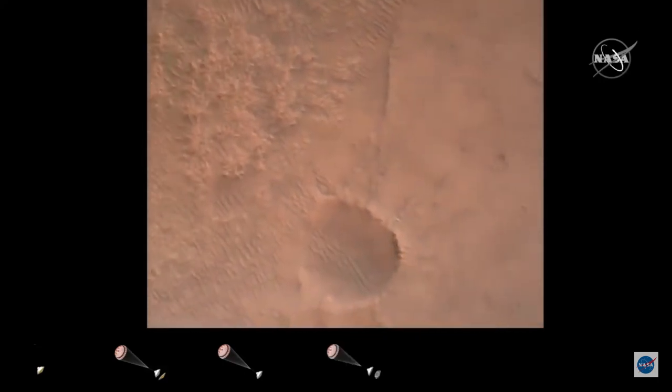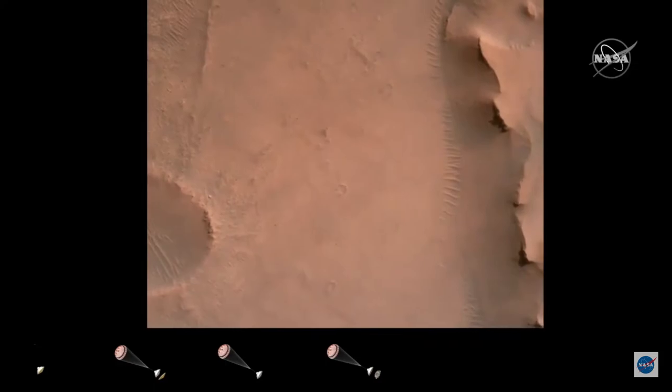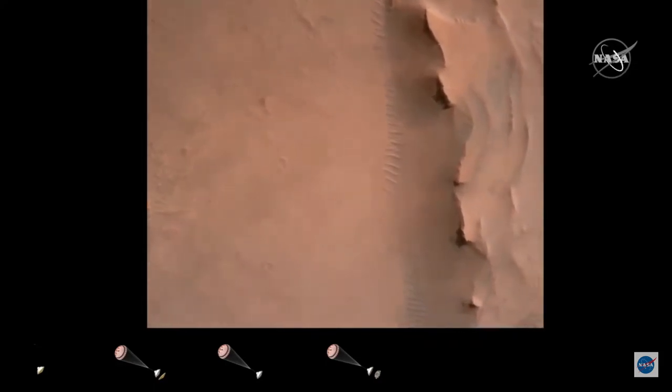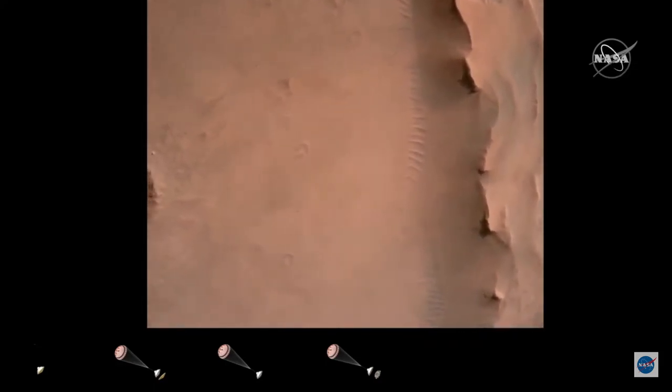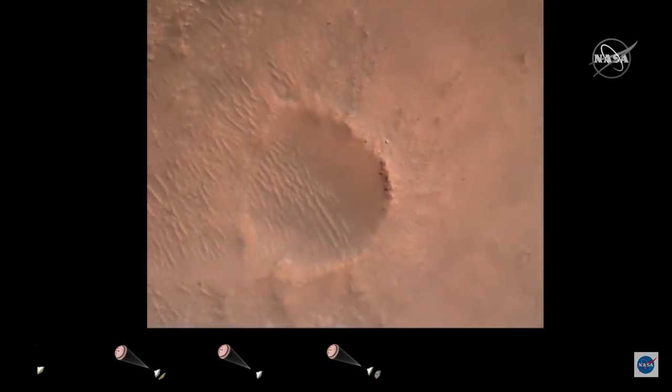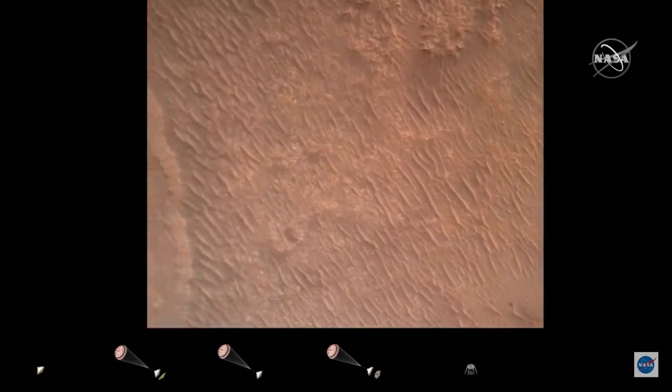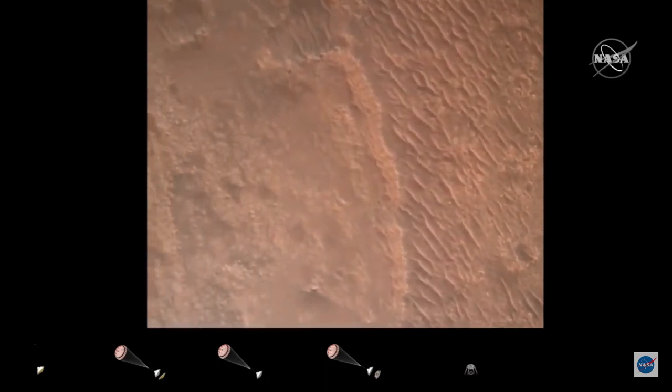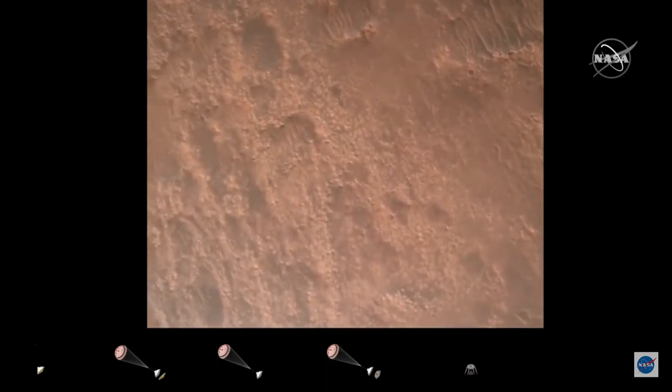Back shell separated. Current velocity is 83 meters per second at about 2.6 kilometers from the surface of Mars. We have confirmation that the back shell has separated. We are currently performing the divert maneuver. Current velocity is about 75 meters per second at an altitude of about a kilometer off the surface of Mars.